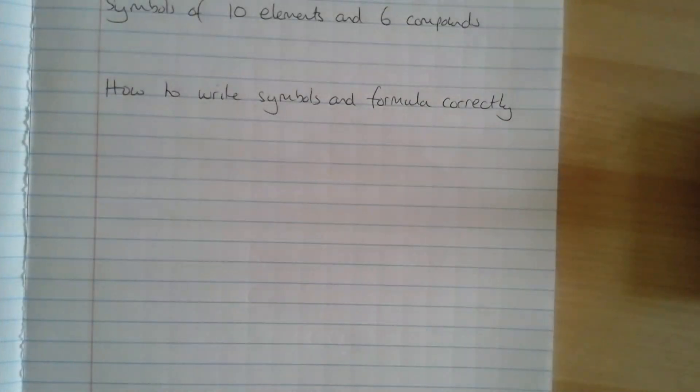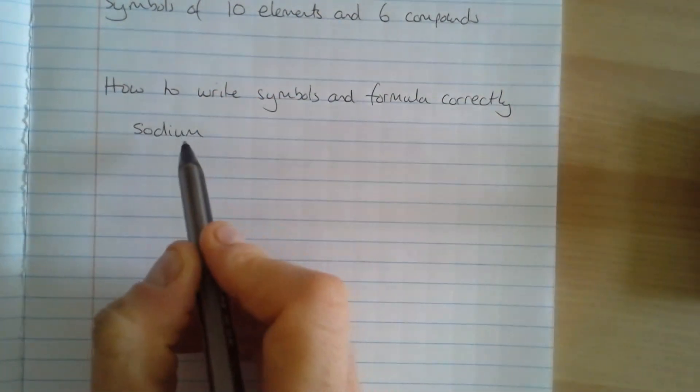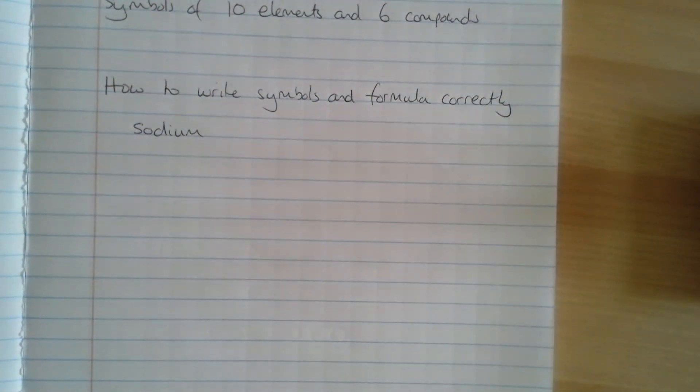So before we talk about how you're going to make your revision resource, I just want to check that we understand how to write symbols for elements properly. So I'm going to use sodium as an example first of all.